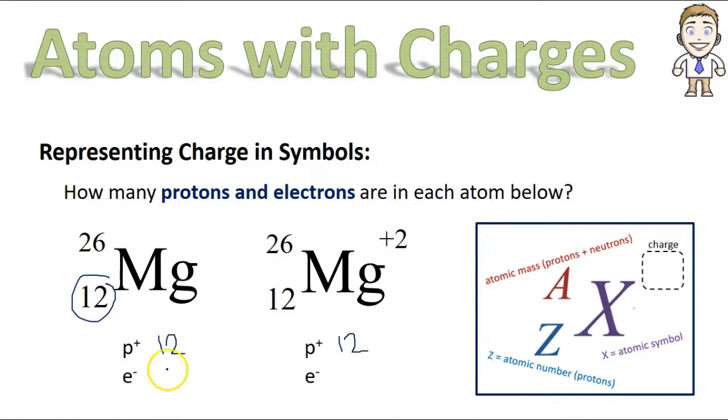The electrons take a little more thought. For that, you have to consider the charge. This first symbol has no charge, which means it's neutral. And to be neutral, the positive team and negative team are tied. So if there's 12 positives, there's 12 negatives to balance them out.